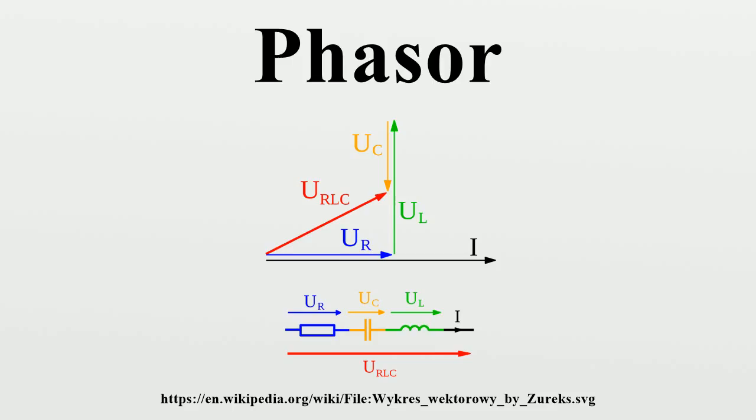is known as phasor, complex amplitude, and sinor or even complexor. A common situation in electrical networks is the existence of multiple sinusoids all with the same frequency, but different amplitudes and phases.